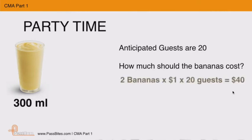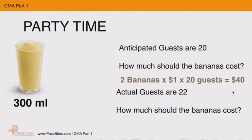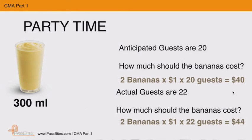The answer is simple: 2 bananas times $1 times 20 guests gives us $40. But if the actual guests are 22, how much should the bananas cost when serving each milkshake to individual guests? 2 bananas times 22 guests gives us $44.